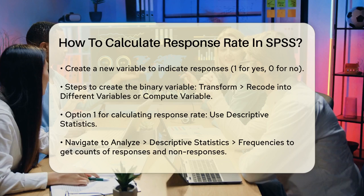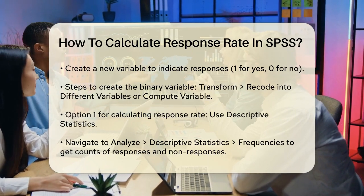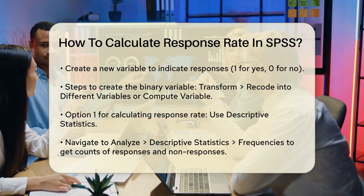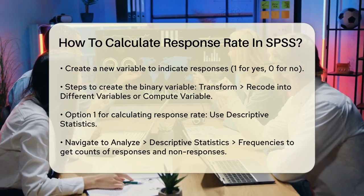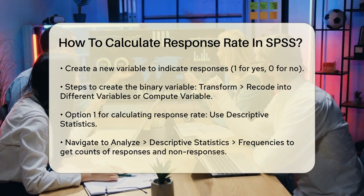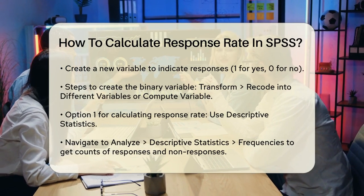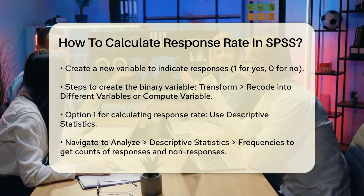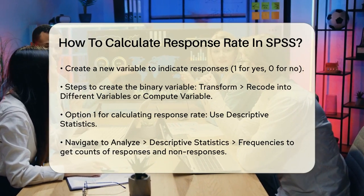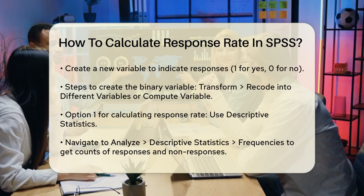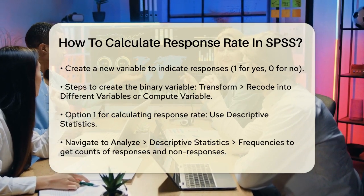Now, let's calculate the response rate. You have a couple of options to do this in SPSS. Using Descriptive Statistics: go to Analyze > Descriptive Statistics > Frequencies. Select your response variable — the one you just created — and click OK. This will give you the count of responses (ones) and non-responses (zeros).